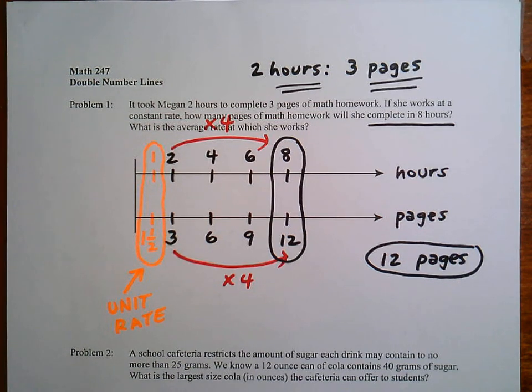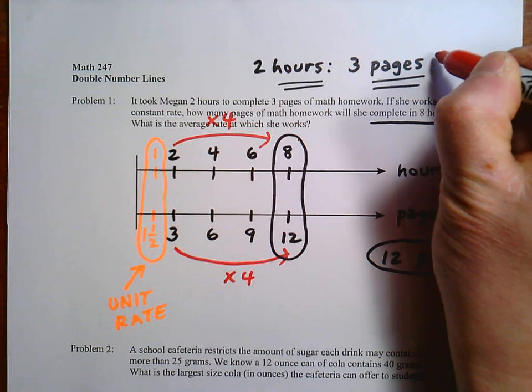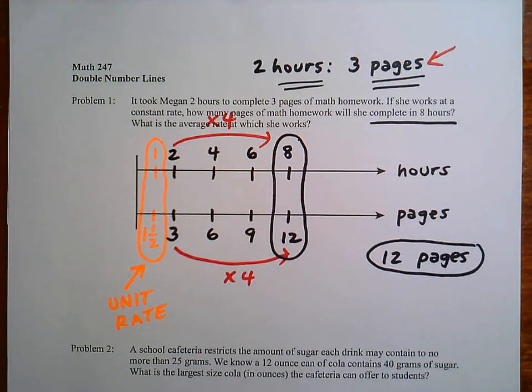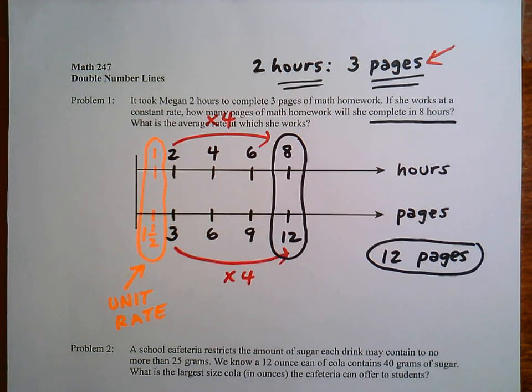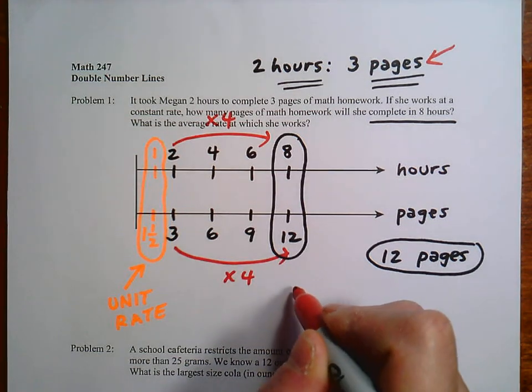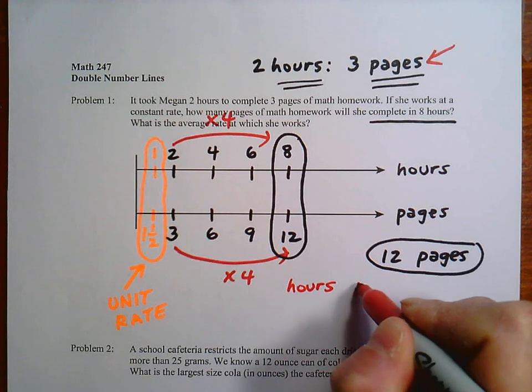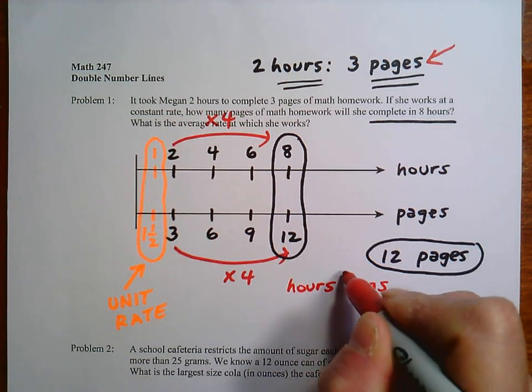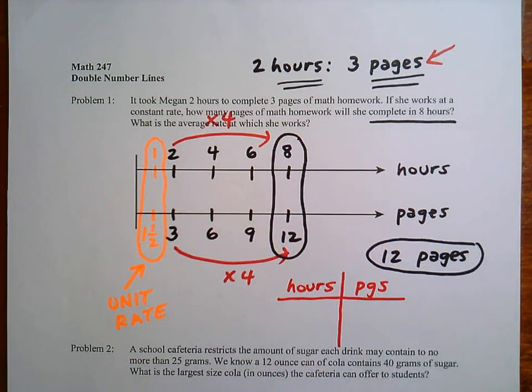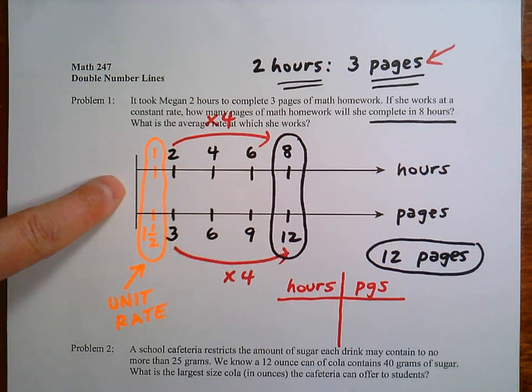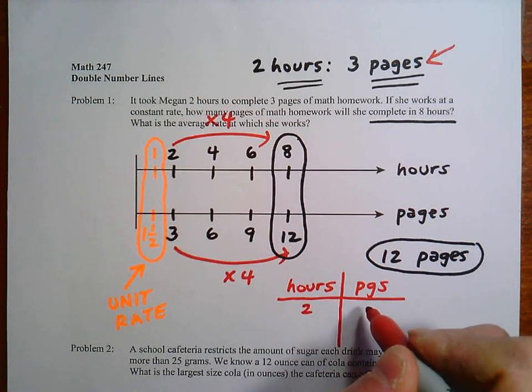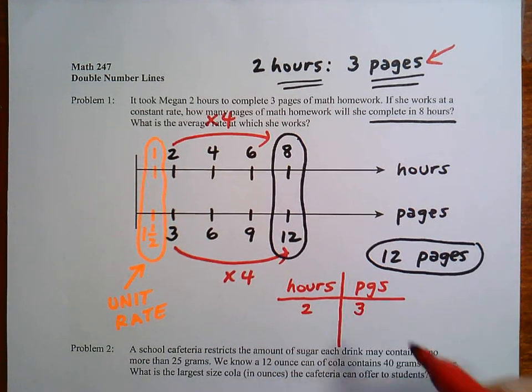So another thing I'll ask you to do on these problems, in addition to writing the basic ratio in the problem, is to also use something that we call a ratio table. So that's another quick way that you can solve the problem. So I'm just going to show it here. So we have hours and we have pages. So this is not something you have to do. It's a supplement. It's something you can do in addition to this. So if you write down the main ratio, 2 hours and 3 pages.